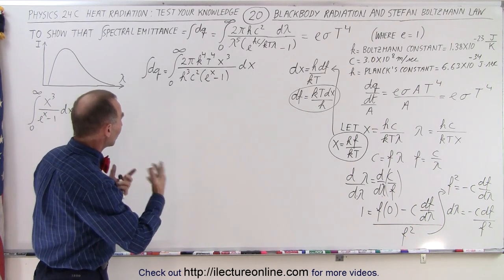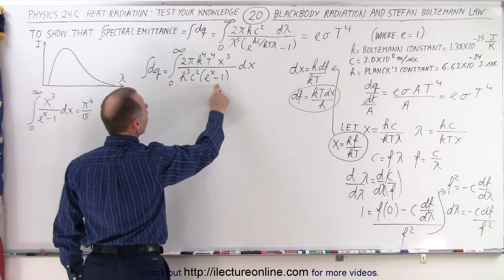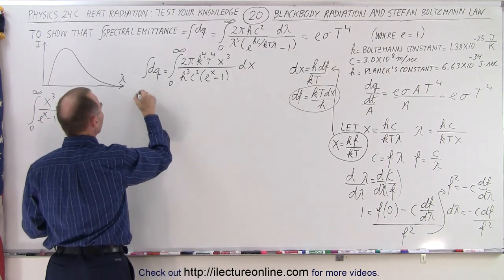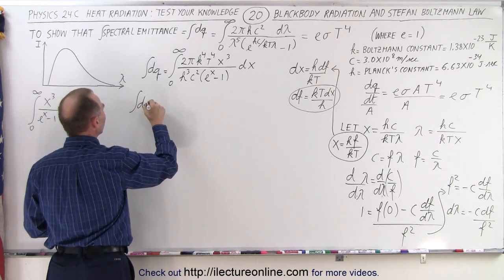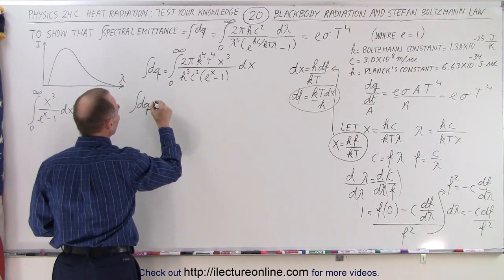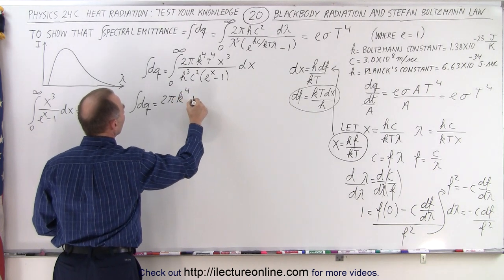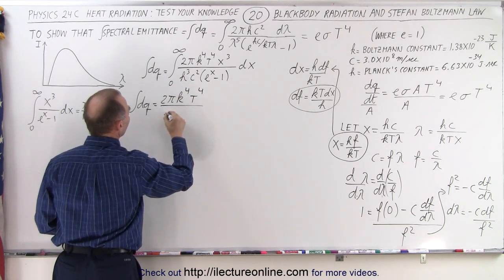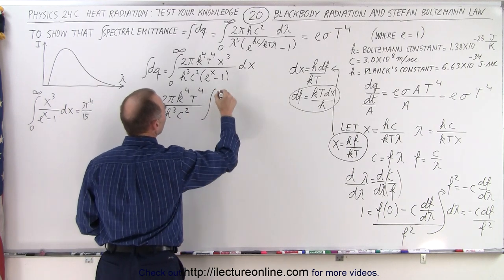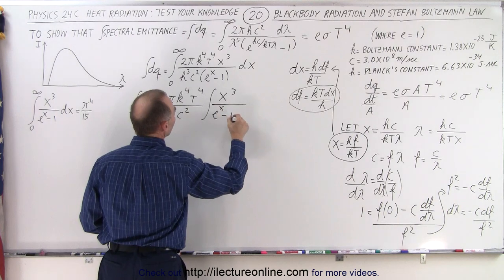So the next thing to do is to realize that everything besides the x cubed over e to the x minus 1 dx is a constant, so that comes out of the integral sign. The integral of dq over the entire range of the black body radiation curve is equal to 2πk to the 4th T to the 4th divided by h cubed c squared times the integral of x cubed divided by e to the x minus 1 dx.